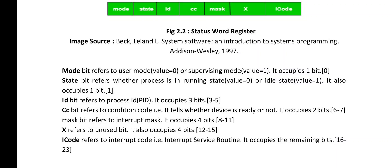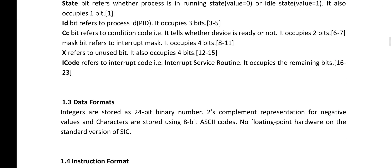The next information in the status word register is the X bit, which refers to an unused bit. It also occupies 4 bits, at positions 12 to 15. The last information of the status word register is the ICODE, which refers to interrupt code, that is the interrupt service routine. It occupies the remaining bits, 16 to 23. So this concludes the information relating to the status word register of the SIC architecture. With this we have learnt about memory and also about the registers.